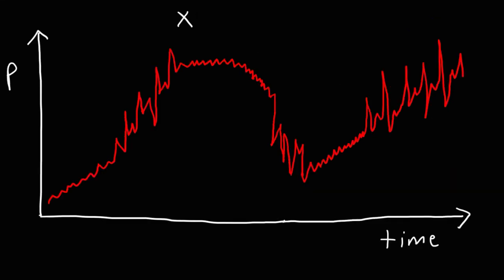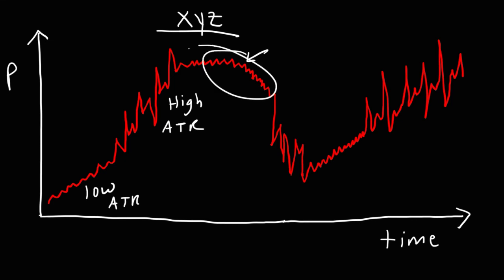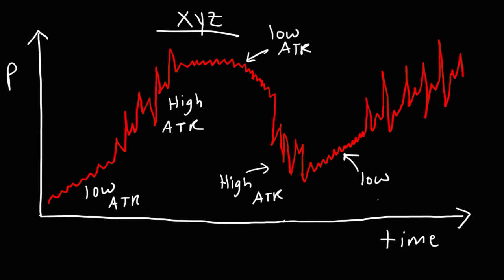Consider the chart of stock XYZ. I want you to identify all the regions of low volatility and high volatility. In this first region, since the volatility is low, the ATR value will be low. In the next section, volatility is high, so we would expect a high ATR value. Over here, the volatility is low, so the ATR value will be low. Here, the volatility is high — that would correspond to a high ATR value. This region would have a low ATR value, and that next region will have a high ATR value.